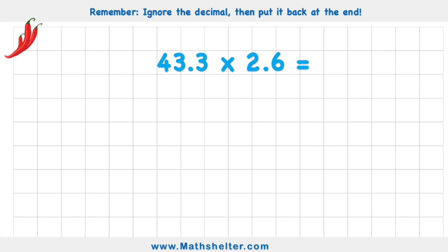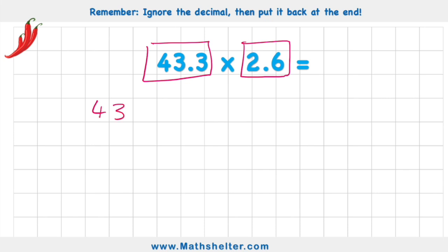Let's have a look at a slightly harder one — now we have two numbers that both have decimals. I have 43.3 and 2.6. To get these into whole numbers I'm going to make 43.3 ten times bigger, and I'm also going to make 2.6 ten times bigger. So my question will look like this: 433 times 26. Put my column titles: ones, tens, hundreds, and I'm ready to begin.